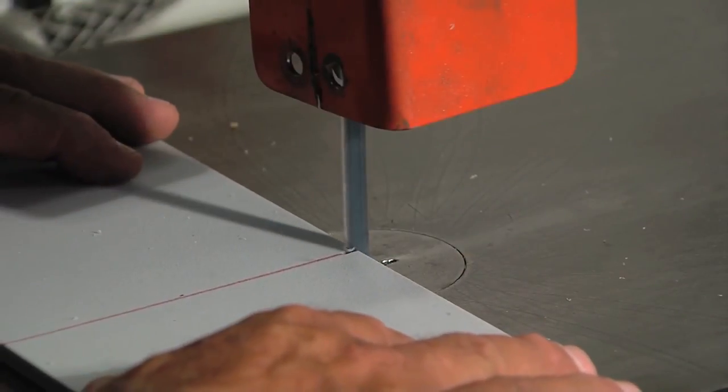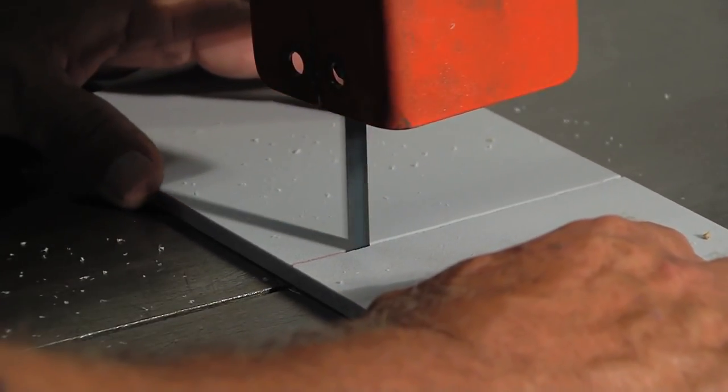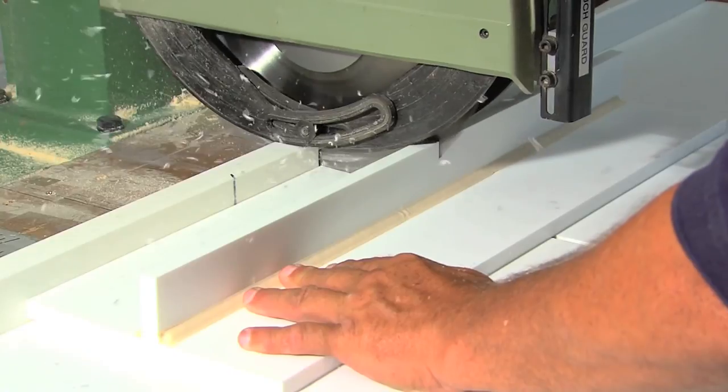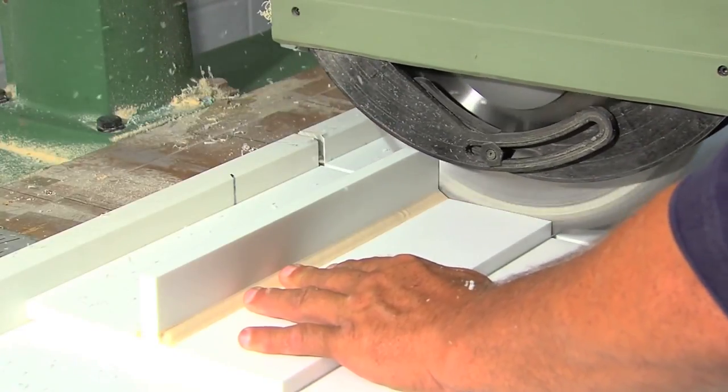King Starboard ST can be cut with all types of saws: band saws, circular saws, hand saws, table saws, and jigsaws.